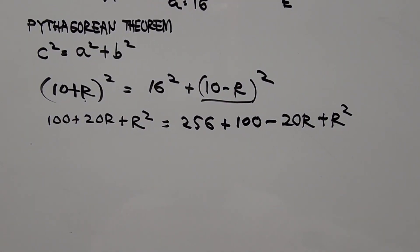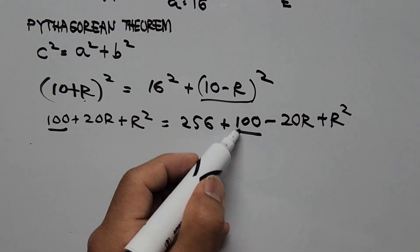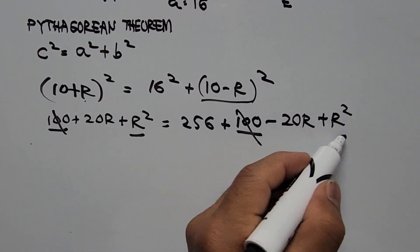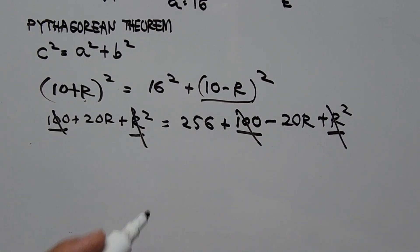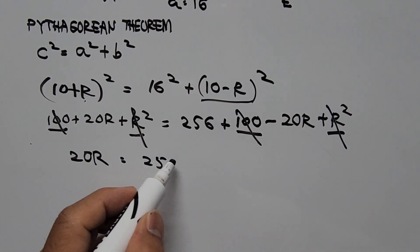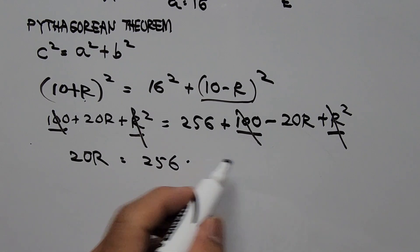Considering our equation, if you notice, we can cancel this 100 right here on both sides. And we have R squared on both sides. Cancel. So we ended up with the left hand side, we have 20R equals 256 minus 20R.